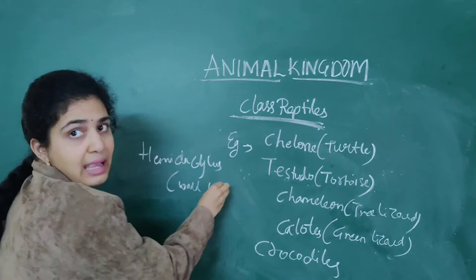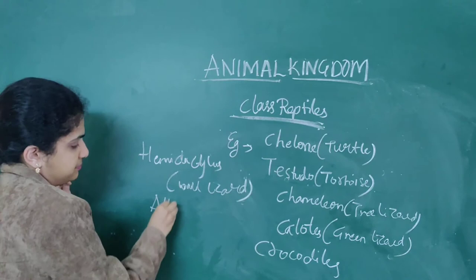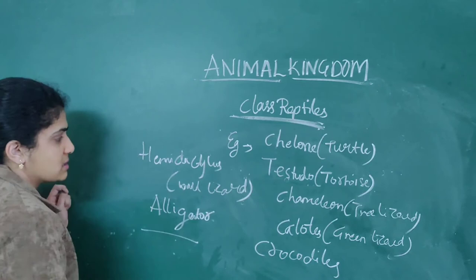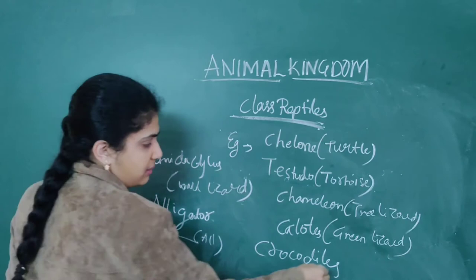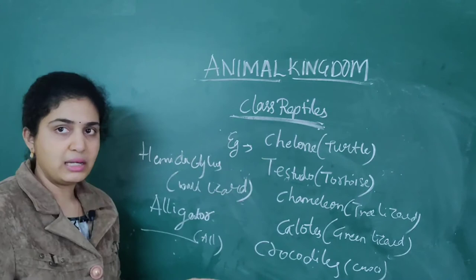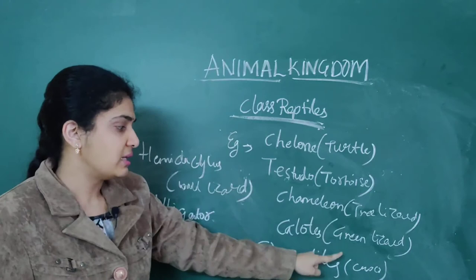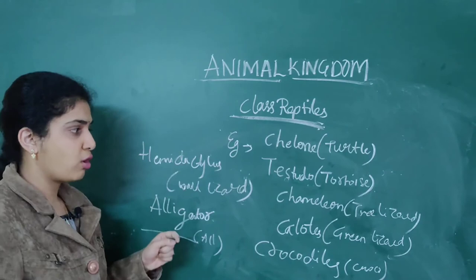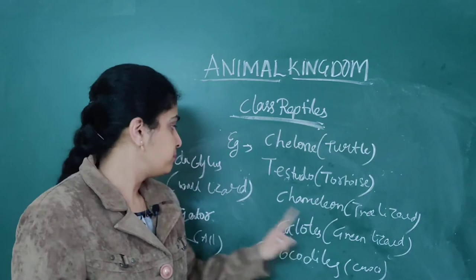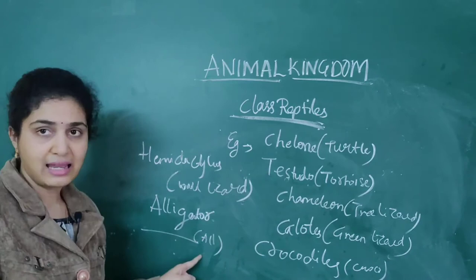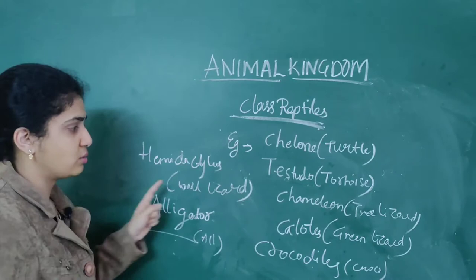Hemidactylus is wall lizard. Then Alligator — its scientific name is also Alligator. Crocodile's scientific name is also Crocodile. So: Chameleon is tree lizard, Testudo is tortoise, turtles, tortoises, lizards, snakes — all are reptiles. Hemidactylus is wall lizard, which is an important question for exams. Green lizard is Calotes, tree lizard is Chameleon — these are important exam questions. Alligator also comes under this class.